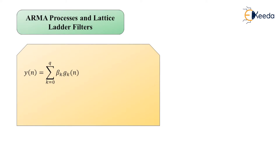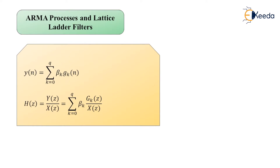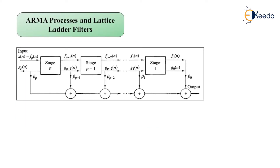The system function is of the form: H(z) = Y(z)/X(z) = summation from k=0 to q of β_k multiplied by the ratio G_k(z)/X(z). This gives us the filter function for the lattice ladder structure, which we now visualize for the pole-zero system.